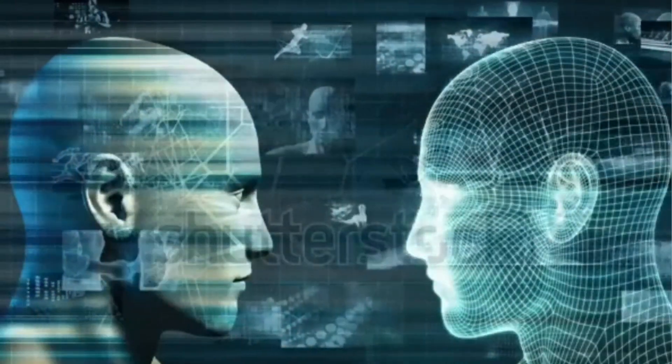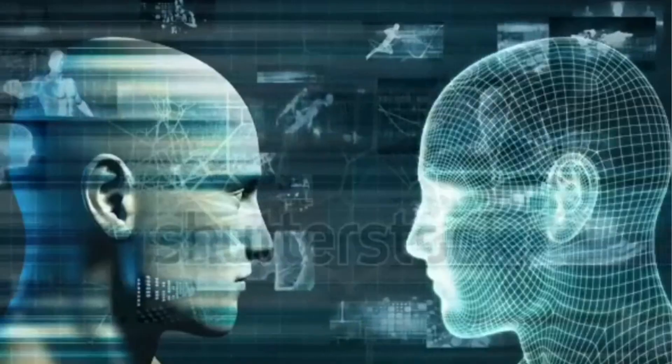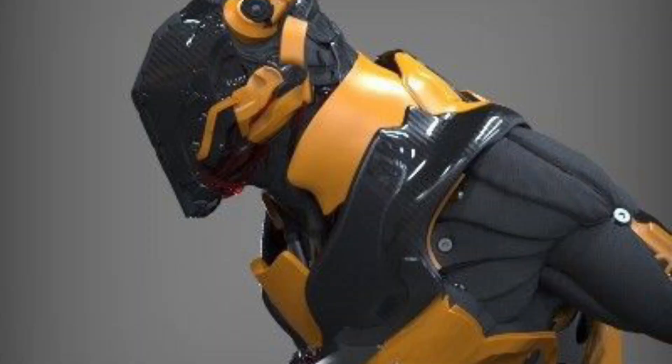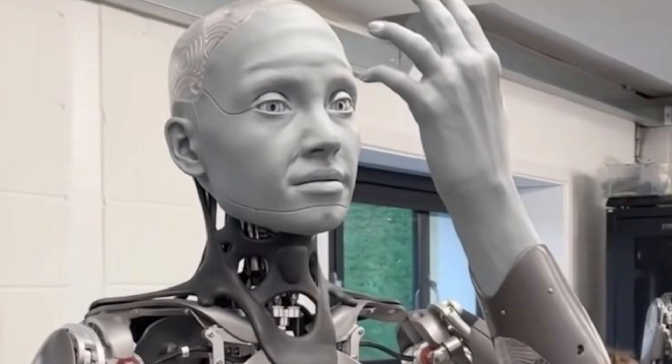Next, we will discuss humanoid robots. A humanoid robot is a robot resembling the human body in shape. In general, humanoid robots have a torso, a head, two arms, and two legs.